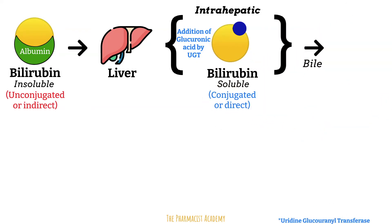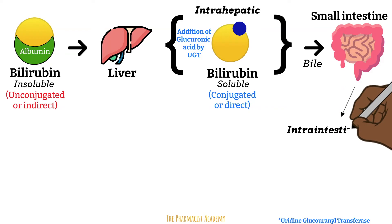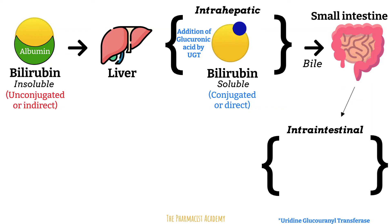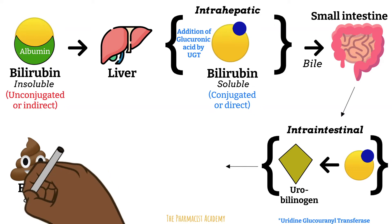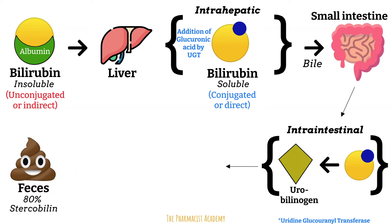This conjugated bilirubin is added to the bile that is released into the small intestines during digestion of food. Within the intestines, the conjugated bilirubin is converted to urobilinogen by intestinal bacteria. About 80% is reduced to stercobilinogen, which is then oxidized into stercobilin and then excreted through the feces. Stercobilin is what gives feces that brownish color.